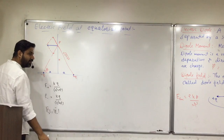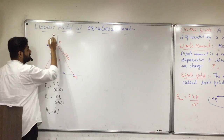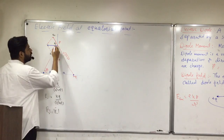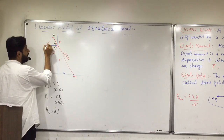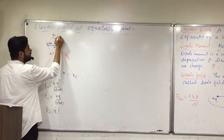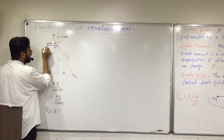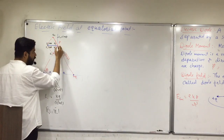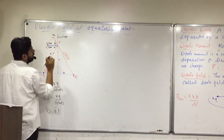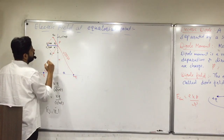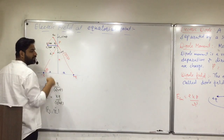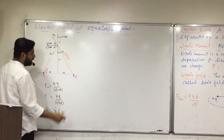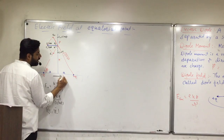The magnitude of E positive is exactly equal to the magnitude of E negative. Now the direction: this is my E negative, this is my E positive. If this angle is theta, naturally this is also theta. So E positive has components E positive cos theta and E positive sin theta. Similarly, E negative has components E negative cos theta and E negative sin theta. The sine components nullify each other because E is the same and theta is the same, so only the cosine component remains.